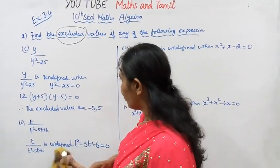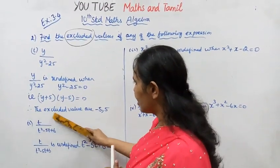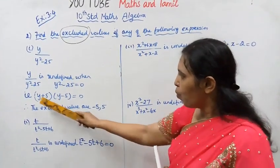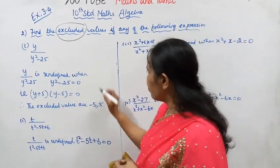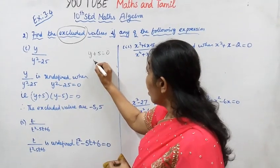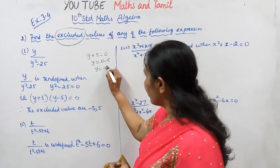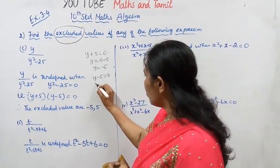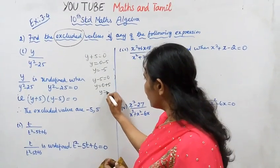So y squared minus 25 equal to zero becomes (y + 5)(y − 5) = 0. Therefore the excluded values are: y + 5 = 0 gives y = −5, and y − 5 = 0 gives y = 5.